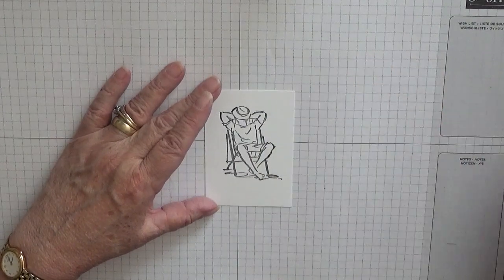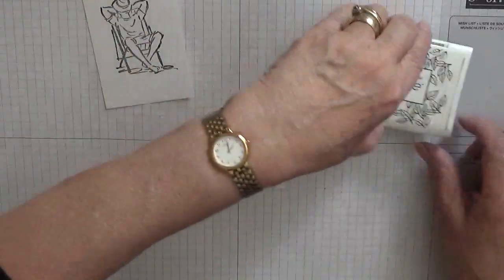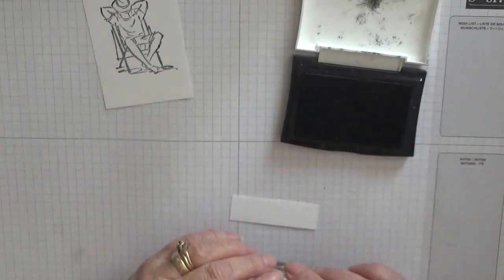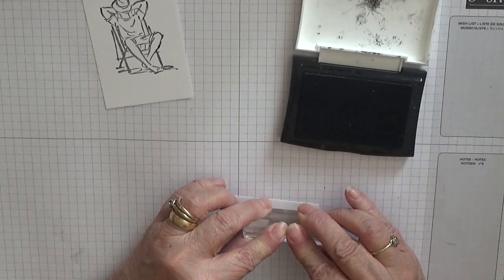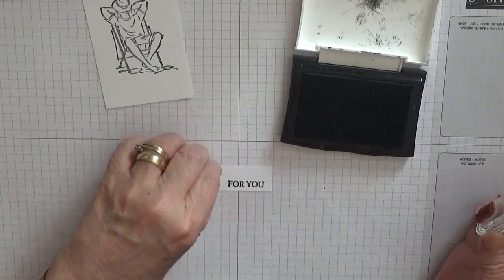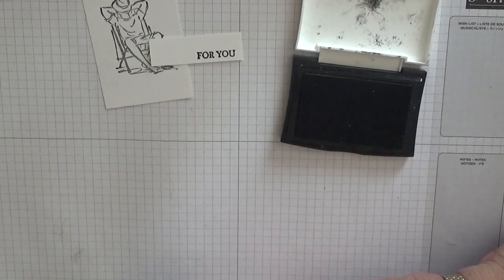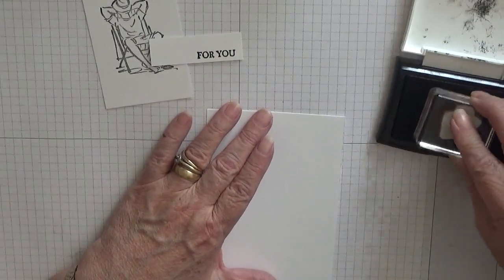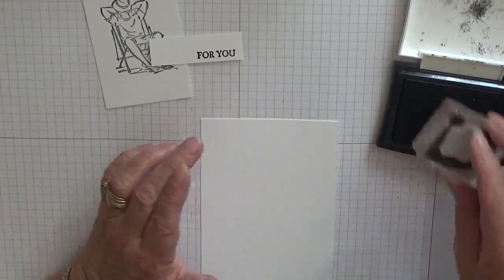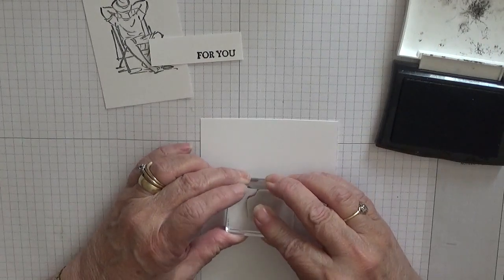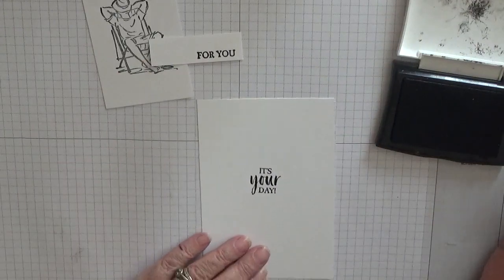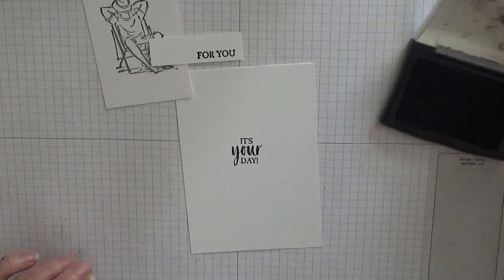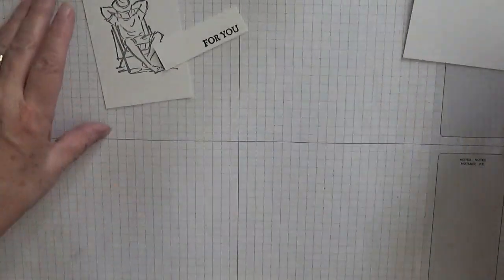Alright, that's that stamped. Now we've just got the 'for you' to stamp, and I'm doing that in my Versafine. We'll stamp that down there because we can cut it up. That's that, and then for the inside piece I stamped 'enjoy your day.' That's our stamping done so we'll just put them to one side to dry.